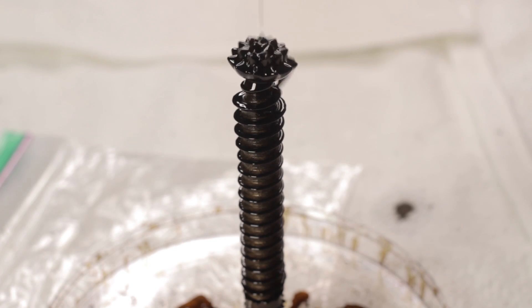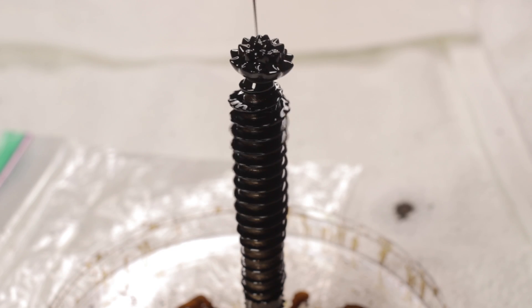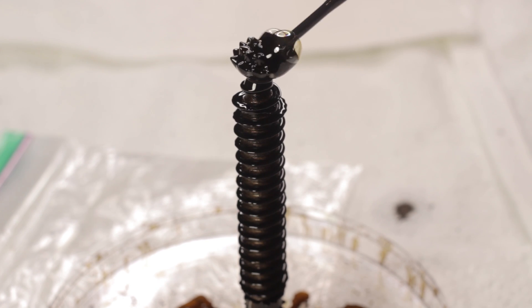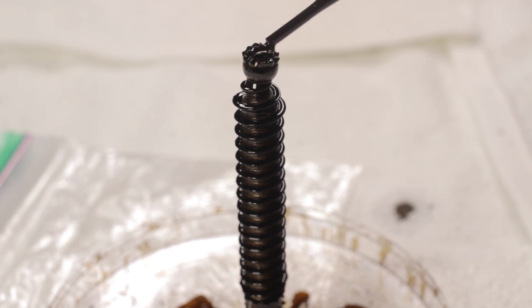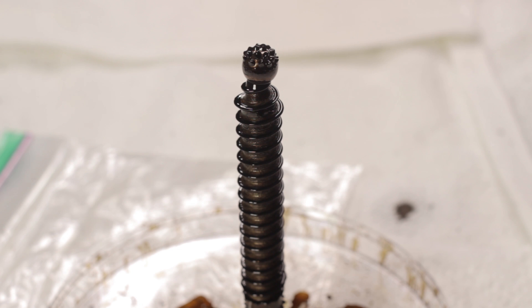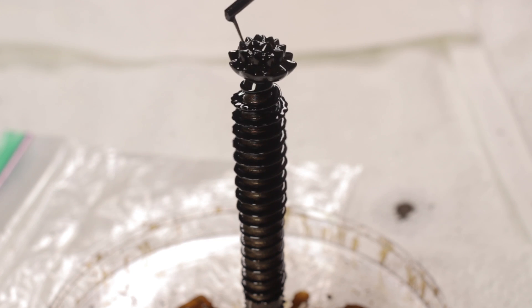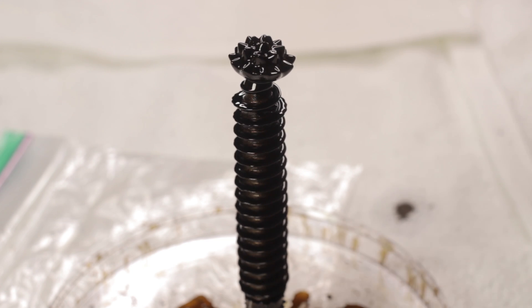True ferrofluids are stable. This means that the solid particles do not separate from the fluid, even in extremely strong magnetic fields. But over time, as the surfactant breaks down, the particles will agglomerate and will no longer contribute to the fluid's magnetic response.